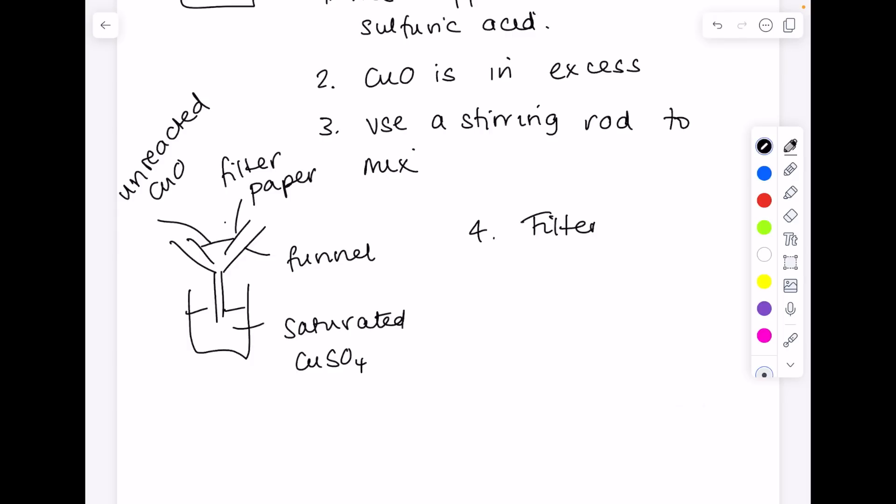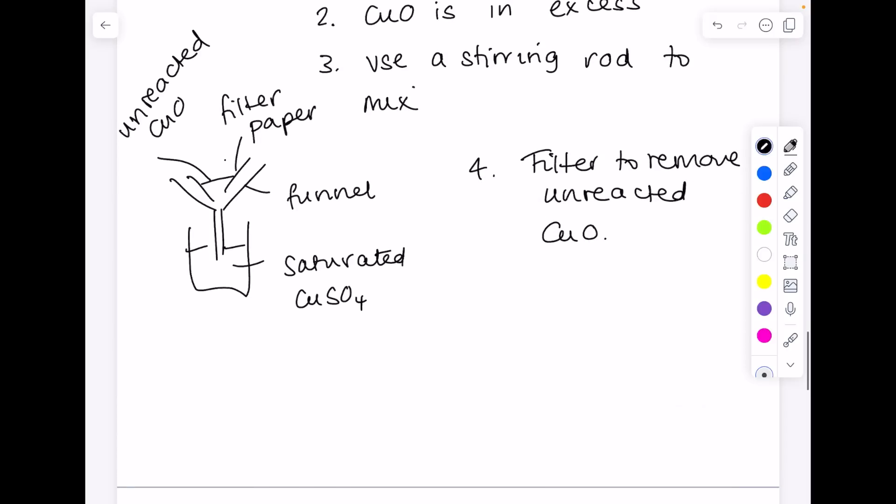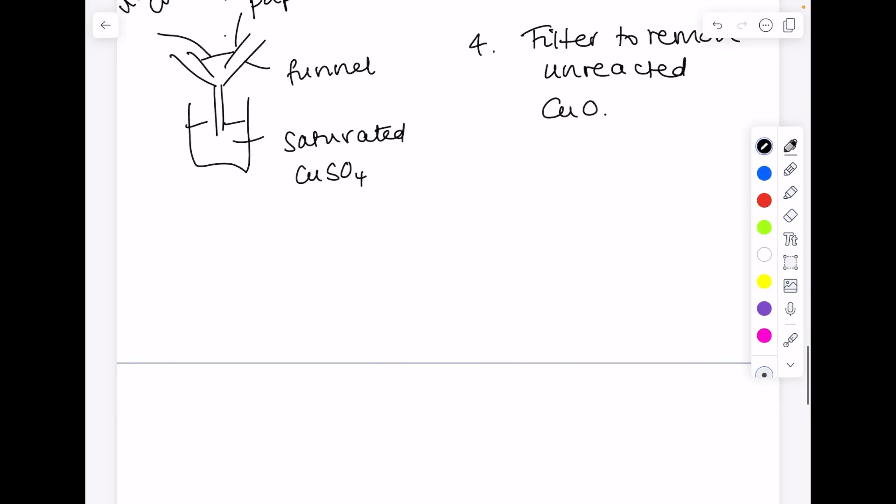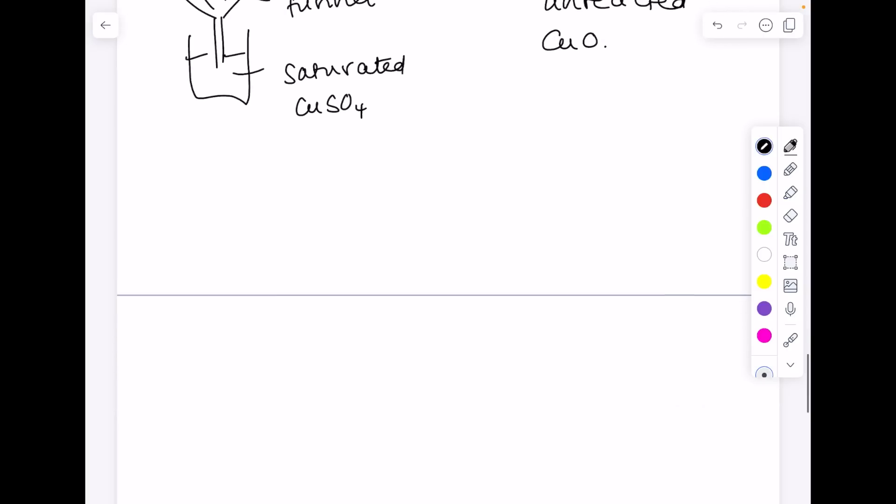Because we need to remove any unreacted copper oxide, we're going to use a funnel with filter paper. There's your unreacted copper oxide, and down here is your saturated copper sulfate solution. We're going to filter to remove unreacted copper oxide. Then, because we probably want to make a dry crystal, they'll be quite specific in the exam. There's my evaporating basin, my saturated copper sulfate solution, here's my tripod, and there's my Bunsen burner. Make sure you can draw these diagrams accurately in a scientific way. I don't want any 3D diagrams in chemistry.